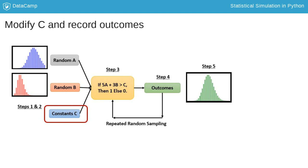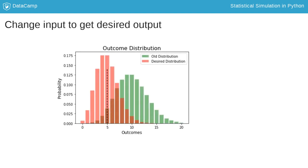We will do this many times and keep recording the outcomes. Finally, we can choose the value of C where the mean of the outcome distribution is 5. Using simulation for making decisions is as easy as that.